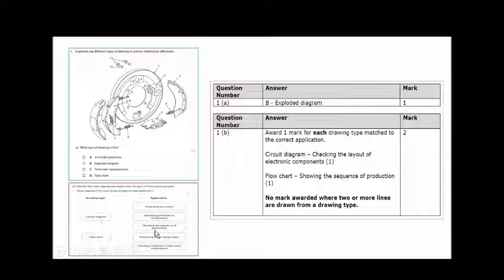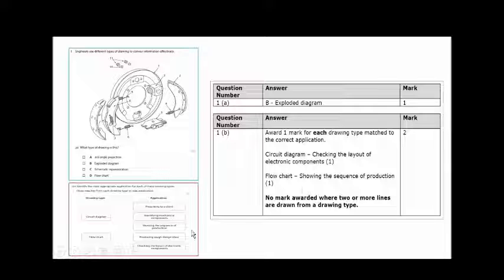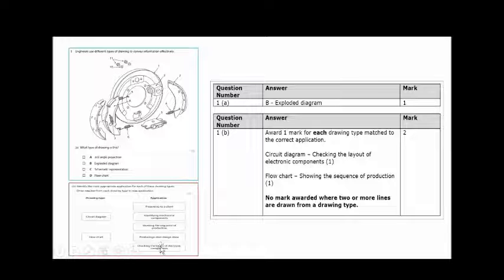A circuit diagram is used for checking the layout of electronic components. And a flowchart is used for showing the sequence of a production — it shows you step-by-step from the beginning to the end. A circuit diagram, out of these options, would be used to check the layout of electronic components.